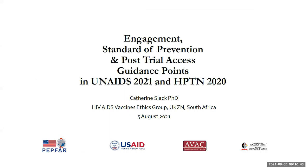Thank you, Stacey, Nandi, and Daisy. I'm going to use 15 minutes and seven slides, focusing on three main issues: the engagement or involvement of community and stakeholders in this research; the standard of prevention that should be ensured for participants in trials; and the issue of post-trial access to beneficial interventions for participants and communities. I'll use two guiding questions: what are the recommendations in the dedicated guidance points, and what is the role of engagement as envisaged by those guidance points?